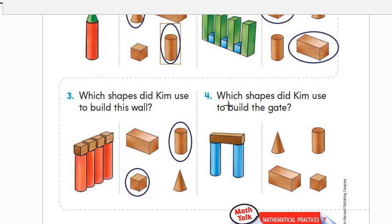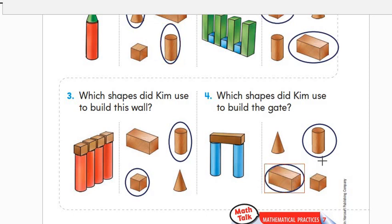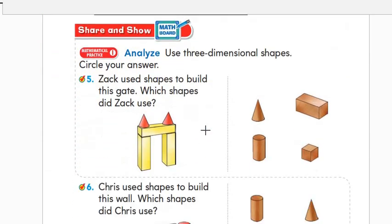Number four: which shapes did Kim use to build this wall and the bridge for the gate? Rectangular prisms and cylinders. How many cylinders? One and two — two cylinders. And how many rectangular prisms? One rectangular prism.